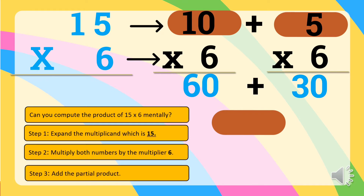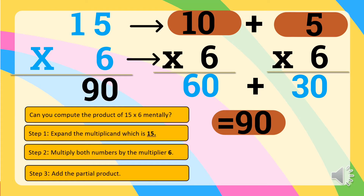Step three is to add the partial products. In this equation, our partial products are 60 and 30. So let's add: 60 plus 30 is equal to 90. Therefore, 15 times 6 is equal to 90.